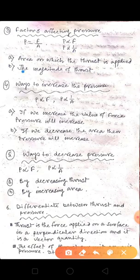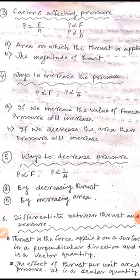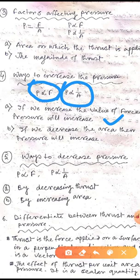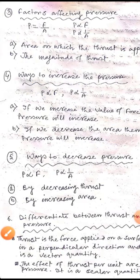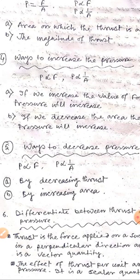Next, ways to increase the pressure. There are two factors. Pressure is proportional to force, so if we increase the value of thrust, pressure will increase. And since it is inversely proportional to area, if we decrease the area, pressure will increase. Ways to decrease the pressure: if we decrease the thrust, the pressure will decrease; and if we increase the area, the pressure will decrease.